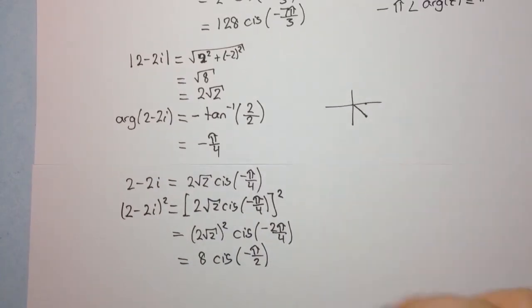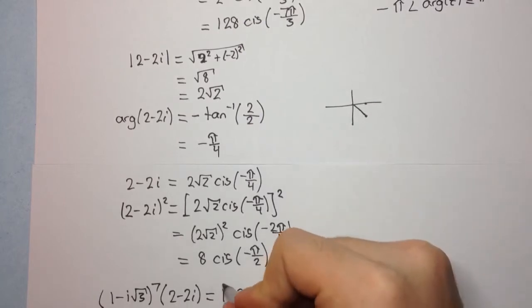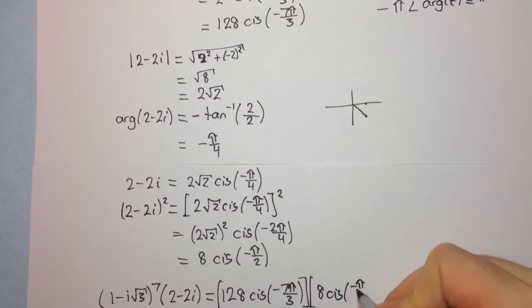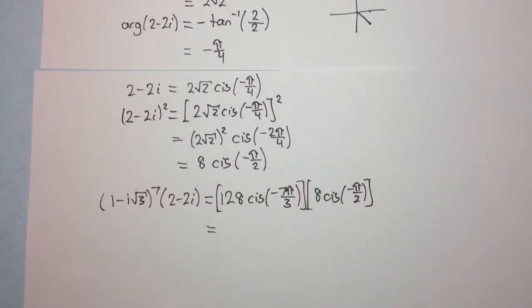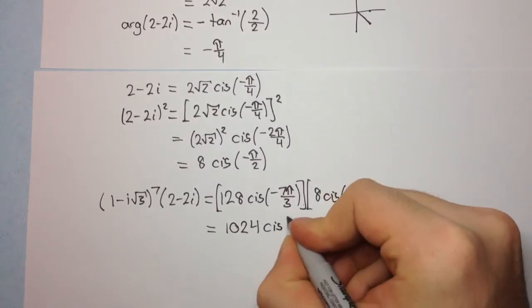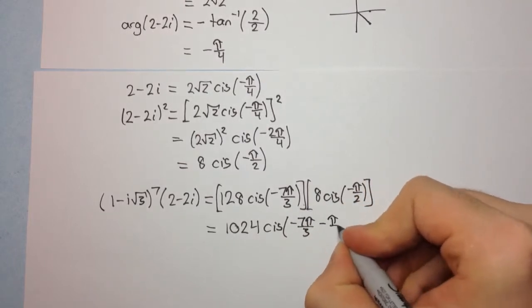So now we can use our 2 expressions in mod arg form, so we're going to get this is equal to, what did we have? We had 128 cis of -7π/3, multiplied by 8 cis(-π/2). So now we're multiplying in mod arg form. So remember, we multiply the moduli, and we add the arguments. So we're going to have, multiplying these two numbers, which we can work out on our calculator, will be 1,024, and when we add the moduli, we'll get -7π/3 plus -π/2, so -π/2.